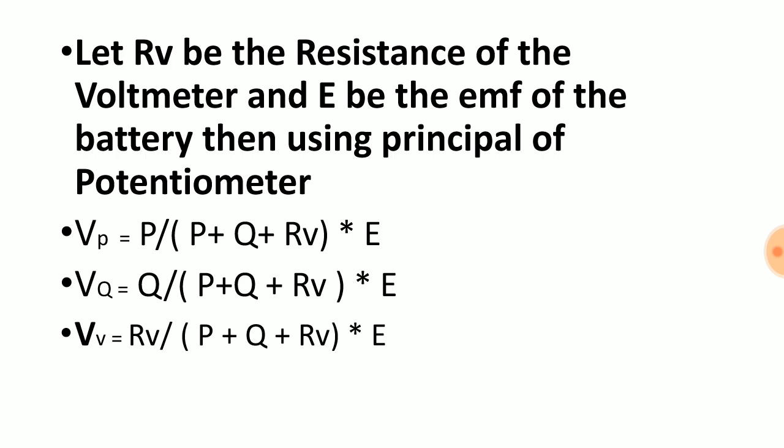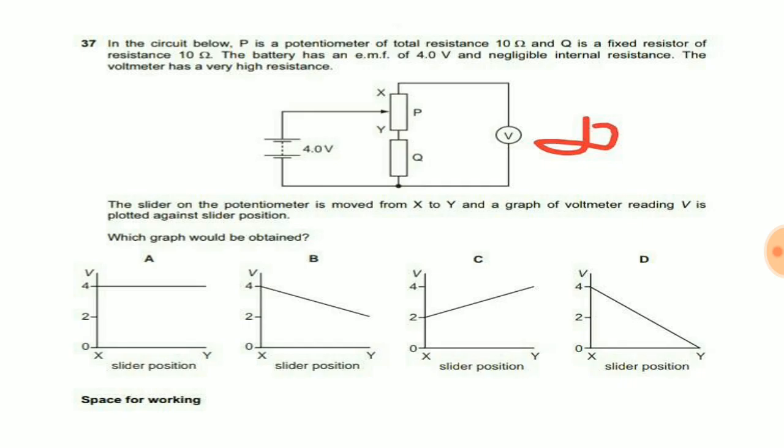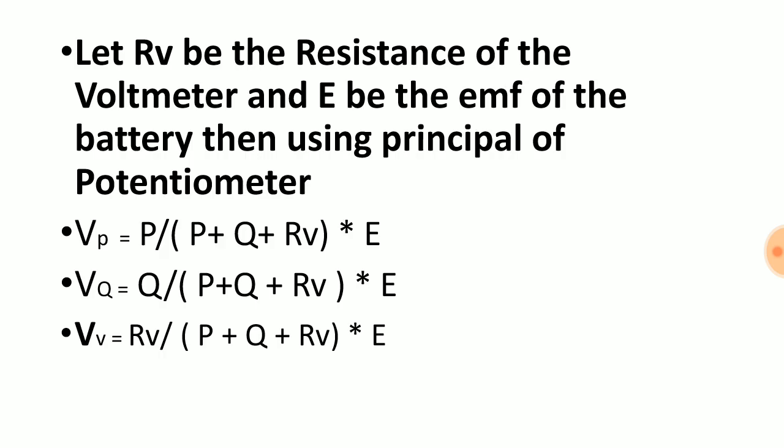If we have to find the voltage across V, we will be using this formula: Rv divided by P plus Q plus Rv times E.